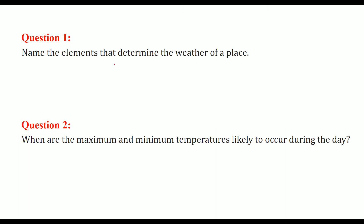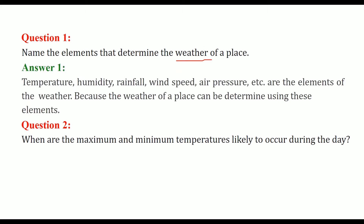Name the elements that determine the weather of a place. Weather means temperature, humidity — which means the content of water vapor — rainfall, which is precipitation, wind, and air pressure. These all are the elements of the weather.